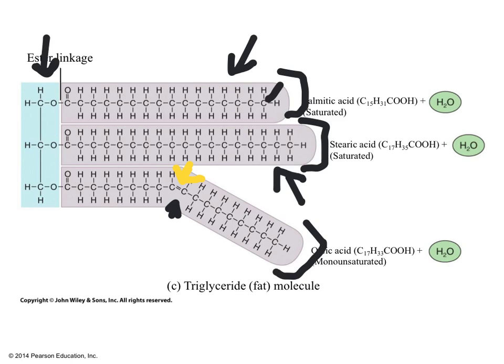Because saturated fats have hydrogens blocking access to the carbon bonding area, they are more difficult to break down. In a monounsaturated fat, the absence of those hydrogens at the double bond creates an opening, making it a little easier to break apart.